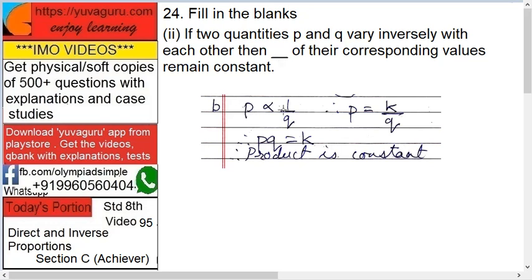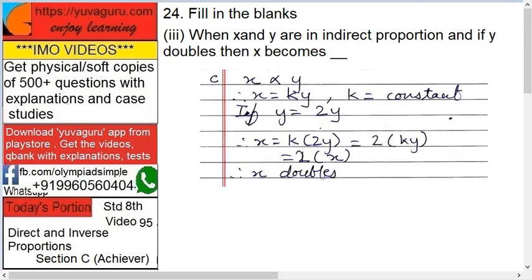Next, if two quantities P and Q vary inversely with each other, then dash of the corresponding values remains constant. Inversely means what? P is inversely proportional to Q. So P is in the denominator, P is in the numerator. So that's P equals K upon Q. So PQ equals K. K is what? Constant.